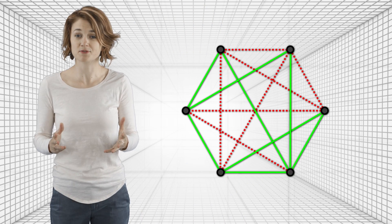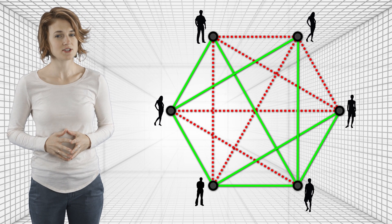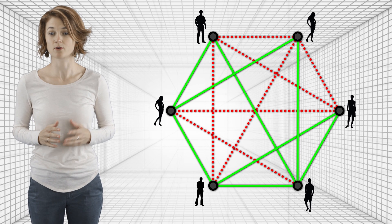With that in mind, let's extend this idea of structural balance to a bigger network, like this one. Each vertex represents a person, and the edges encode the nature of their relationship—either green, friends, or red, enemies.